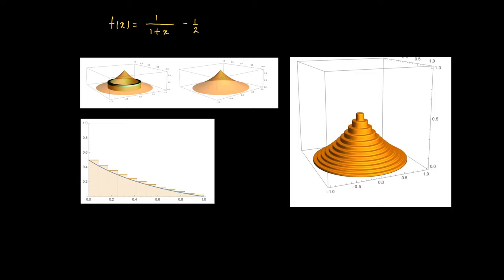An example. Here we have a graph f(x) which equals 1 over 1 plus x minus 1 half. We rotate the area over here about the y-axis and we want to find the volume of the solid that we obtained in this way.